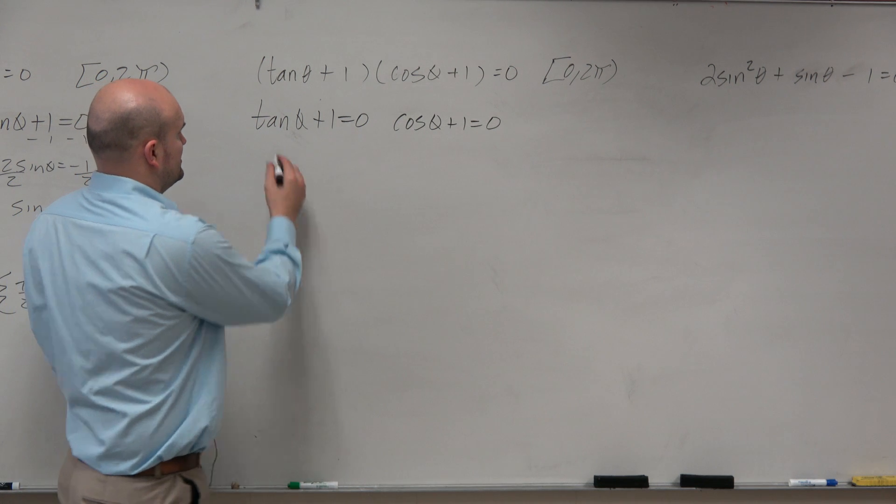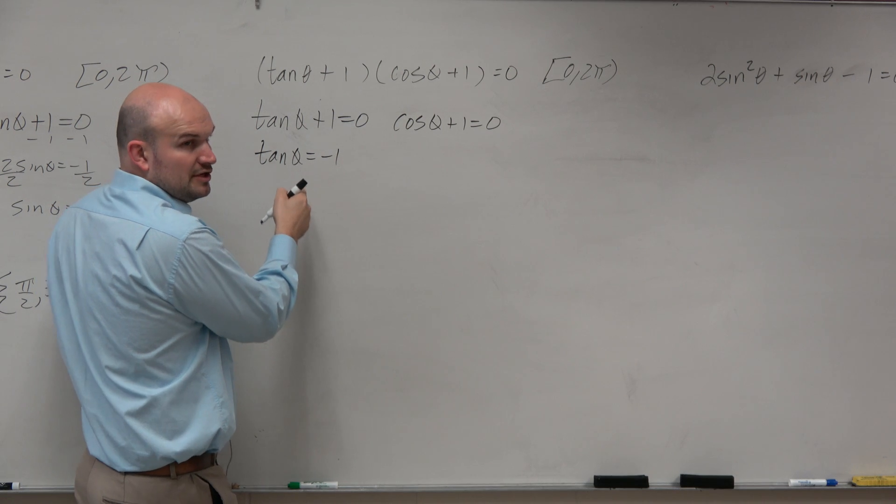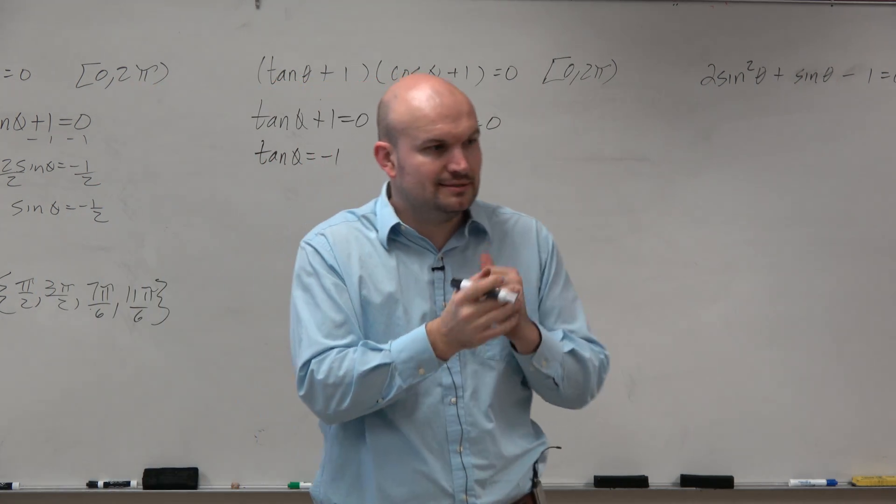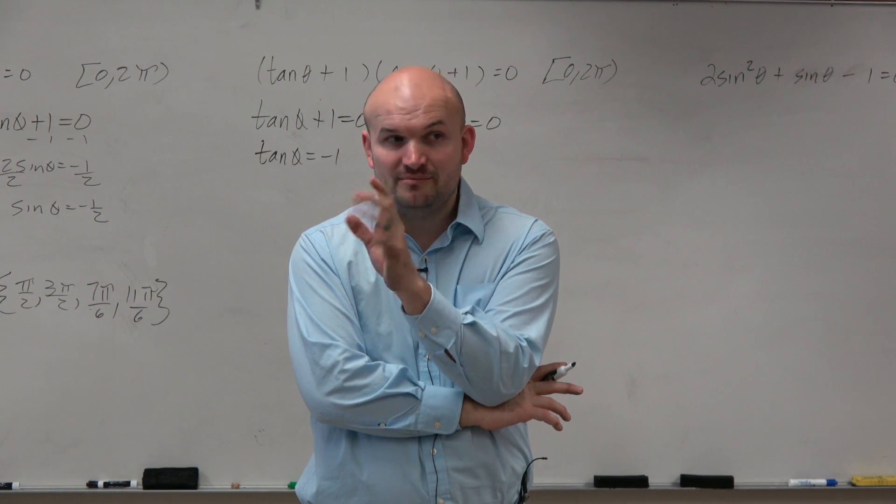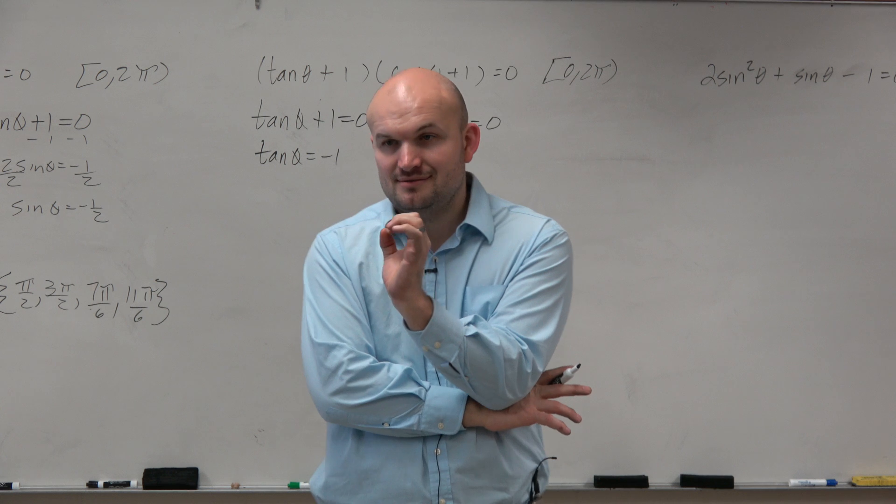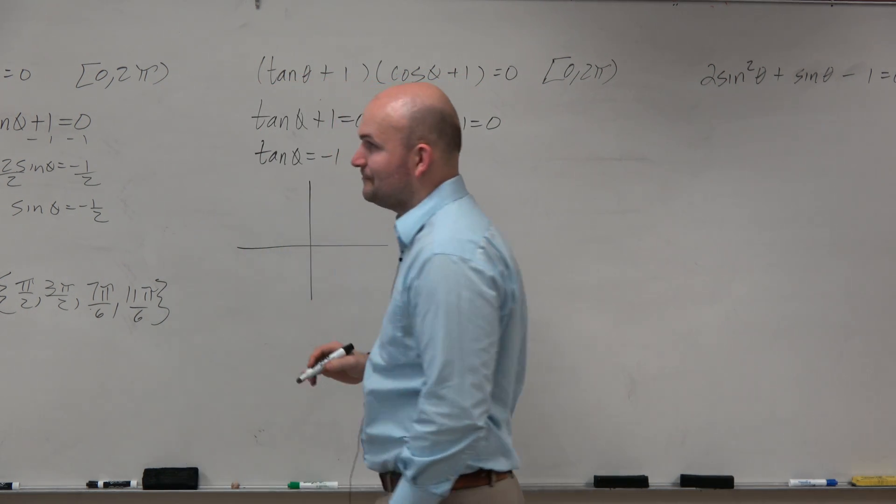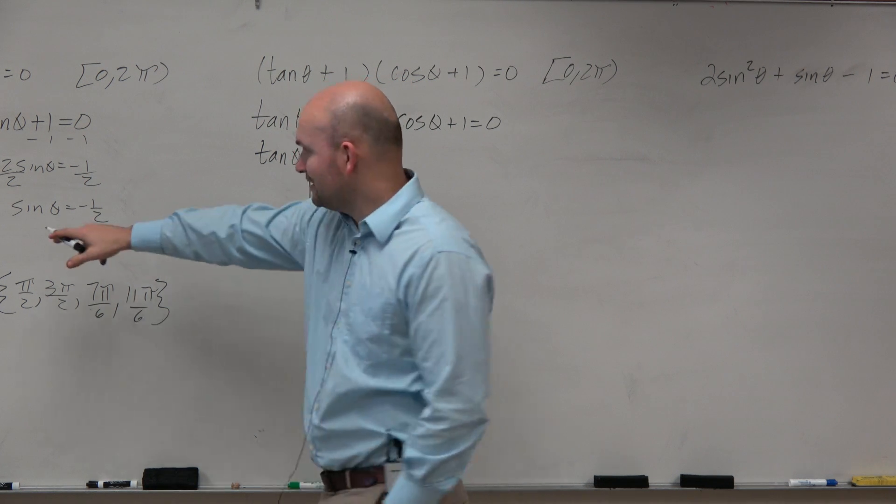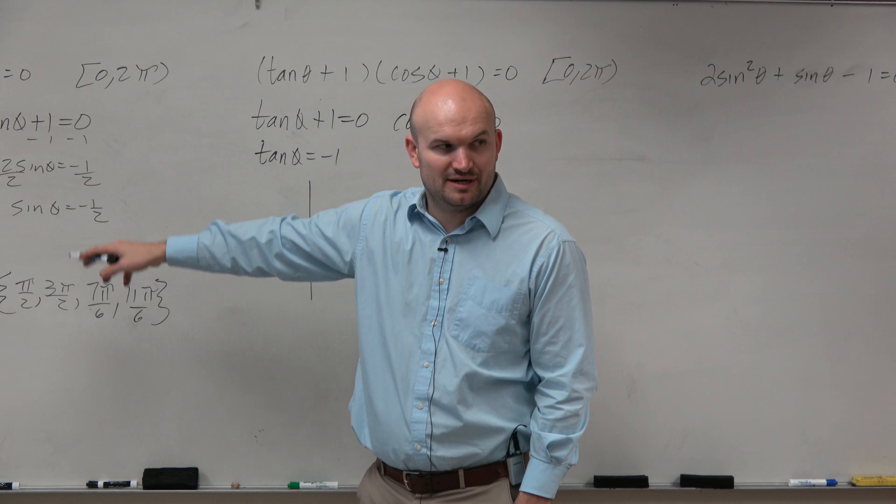So we're basically just saying tangent of theta equals negative 1. What angles on the unit circle mean when tangent is equal to negative 1? I think it's pi over 2. Careful. Remember, tangent is y over x. Guys, look at where pi over 2 is and 3 pi over 2. y over x does not equal negative 1 in any of those.